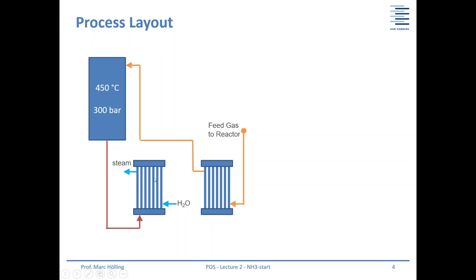First, the hot reactor off-gas is sent to a steam generator — liquid water is fed in and steam is produced, which can be used nearly everywhere inside the ammonia plant. The off-gas is cooled down, then sent to a second, internal heat exchanger. The steam goes elsewhere in the plant, while the reactor off-gas is used to preheat the gas going to the reactor.